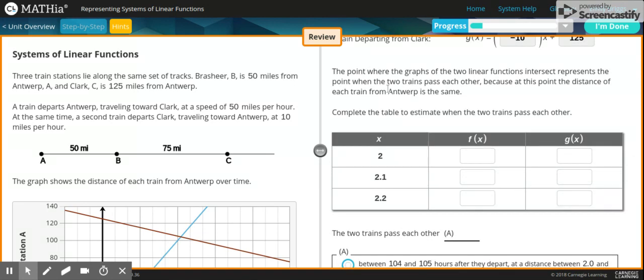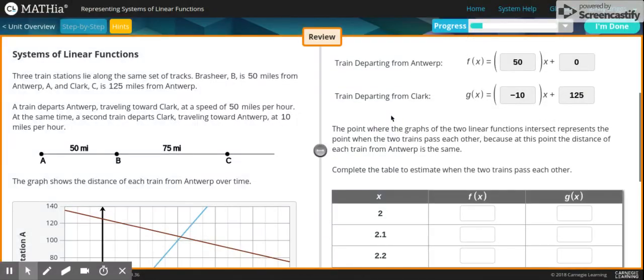So the point where the graphs of the two linear functions intersect represents the point when the two trains pass together. Because at this point, the distance of each train from Antwerp is the same. Complete the table to estimate when two trains pass through each other.